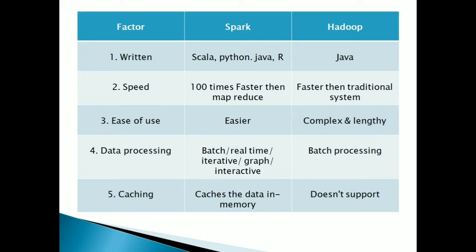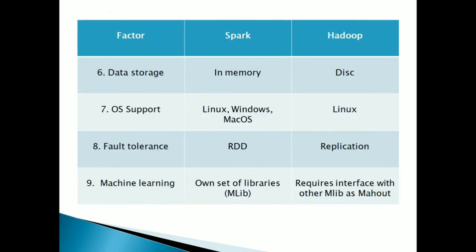Next is caching of data. As mentioned, Spark provides in-memory computation — whenever data is provided to Spark, it is stored in memory and computation is performed in memory itself, so it allows caching of data. Whereas in Hadoop there is no such support available. Due to in-memory computation, Spark's speed is faster compared to Hadoop.